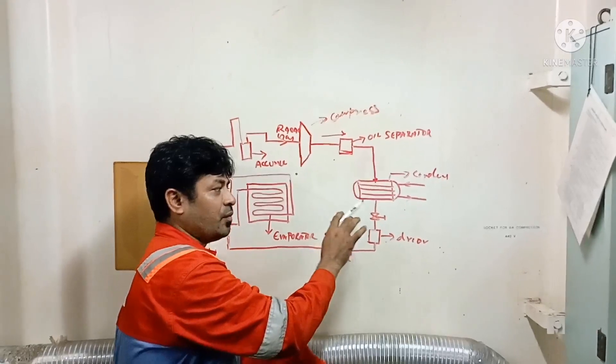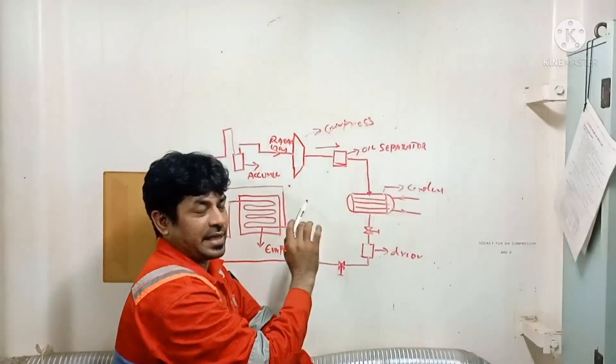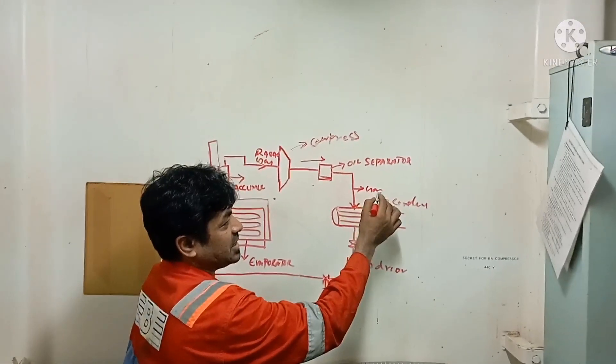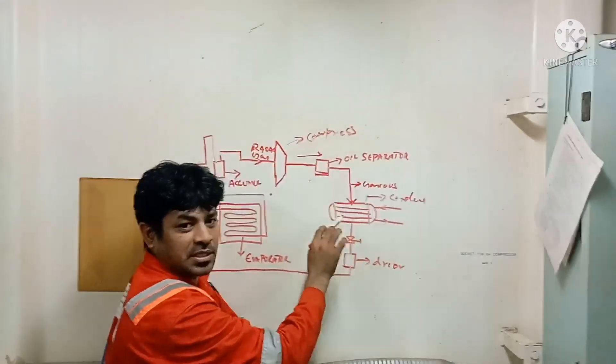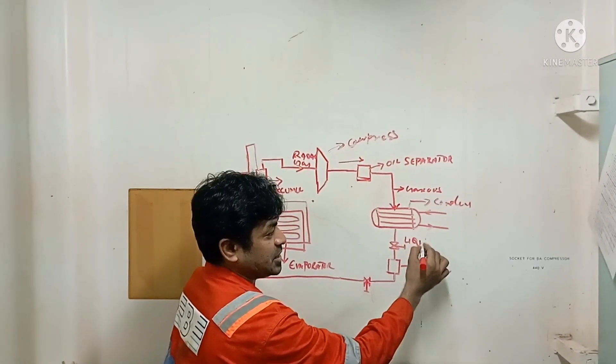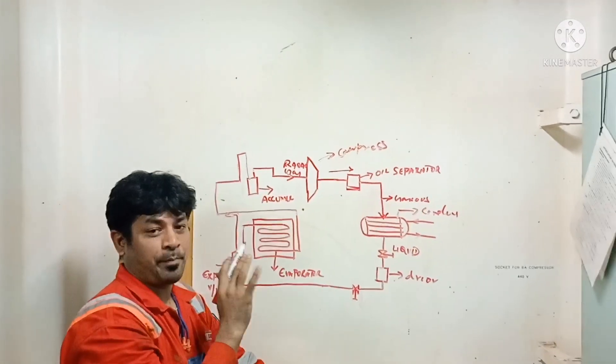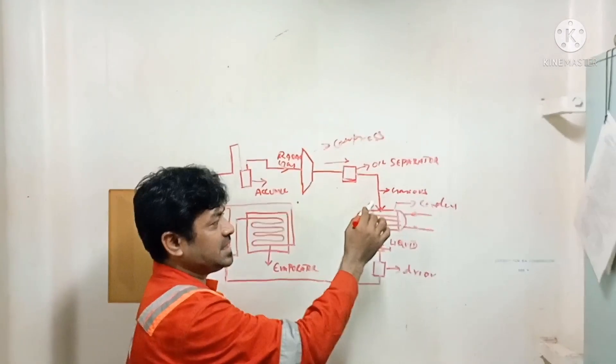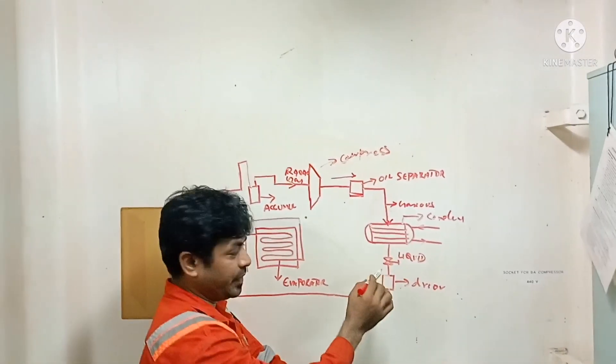The work of the condenser is to remove the heat, that means it condenses the gas. Till here the gas will be in a gaseous stage, and once it crosses the condenser, it will be in a liquid stage. This is called a vapor compression system. The gas comes in a vapor stage, compressed, and once it crosses the condenser, it will become liquid.